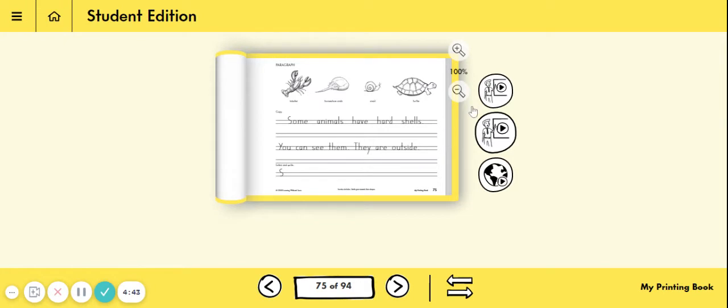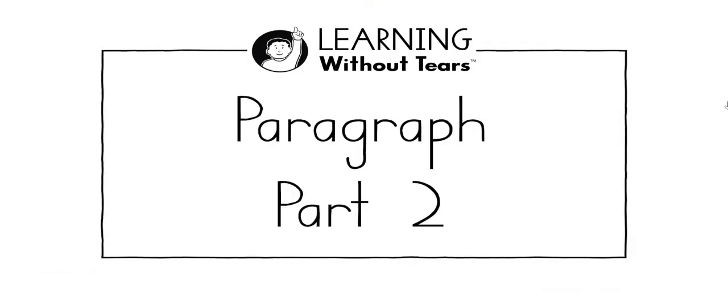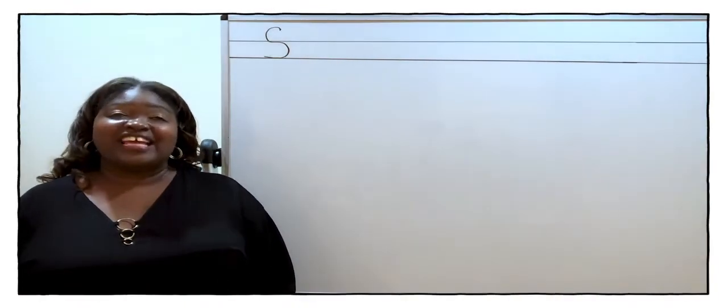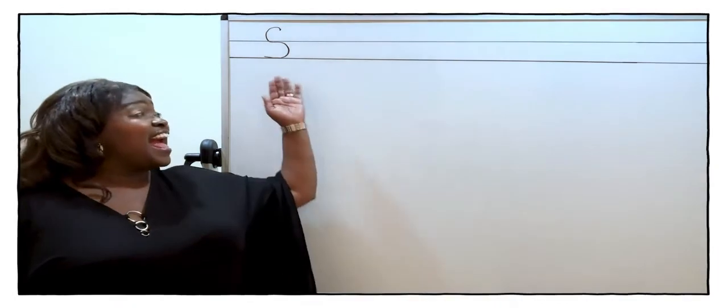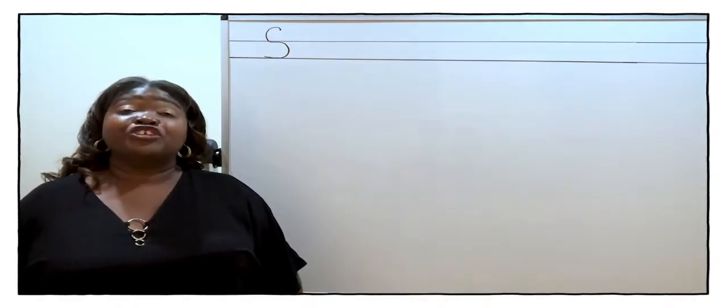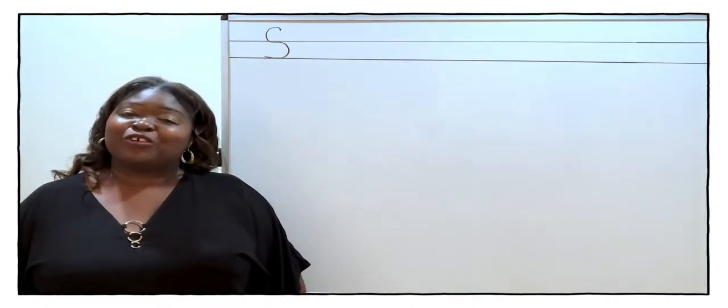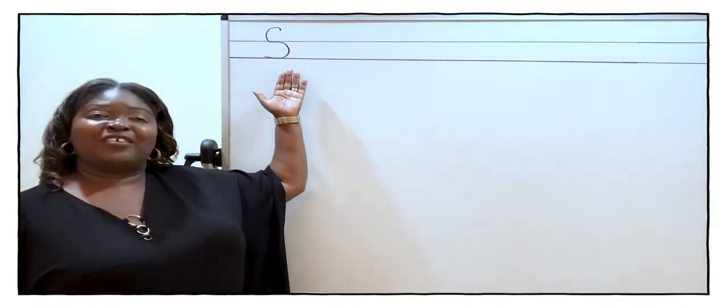All right. Let's go ahead and continue our lesson on how to write a paragraph. Paragraph part two. Now it's time for listen and write. I'm going to say a sentence to you. We've given you the first letter of the sentence, S, for the word shells. Now we're going to write the sentence shells give animals their shapes. Here we go. Again, we've given you the capital S for shells.